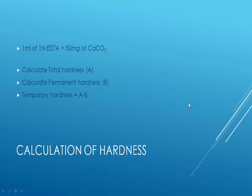If you have the concentration of EDTA, the constant burette reading, and the volume of water sample used for titration, you can easily calculate the total hardness of the given water sample using the equation: 1 ml of 1 normal EDTA corresponds to 50 mg of CaCO₃.